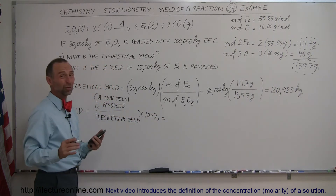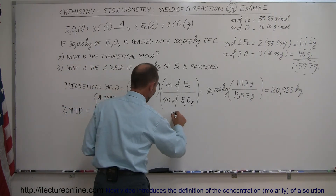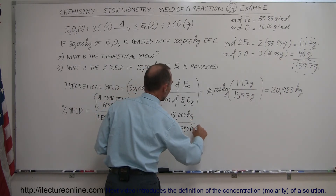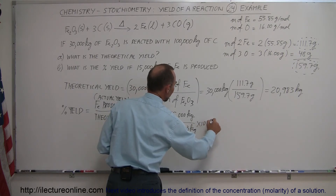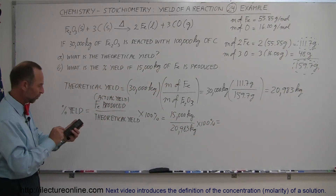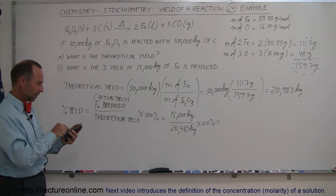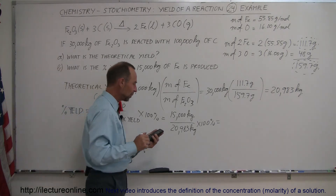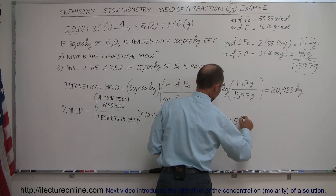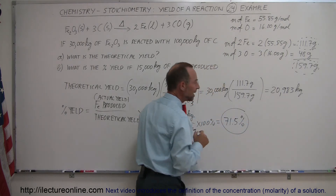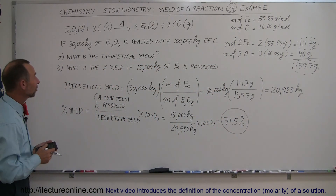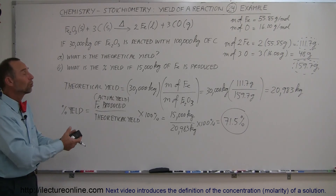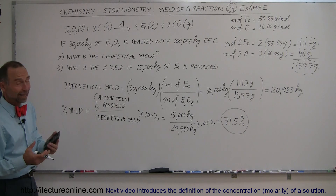Since the actual yield was only 15,000 kilograms and the theoretical yield is 20,983 kilograms, we divide 15,000 by 20,983 and multiply by 100%. That gives us 71.5%. That is the percent yield of this process — we only recover 71.5% of all the iron that we otherwise could have retrieved. And that's how you do that.